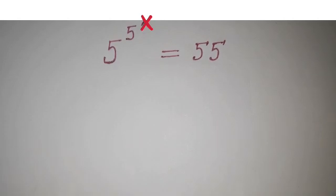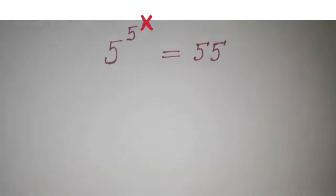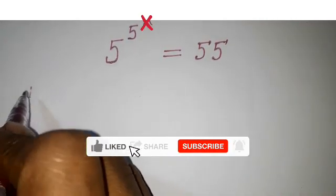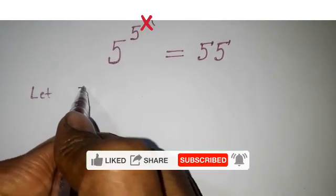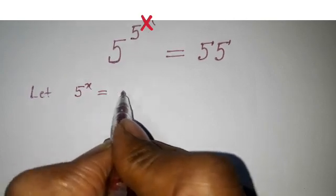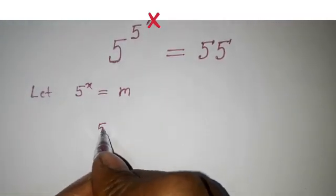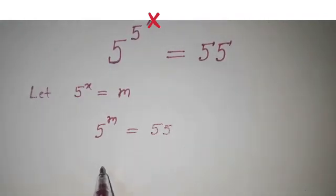Welcome back to Triple X Learning. Today we have this question: 5 to the power 5 to the power x, that is equal to 55. How can we solve this? We can consider part of this as one variable. Let 5 to the power x equal to m, so this equation will become 5 to the power m equals 55.